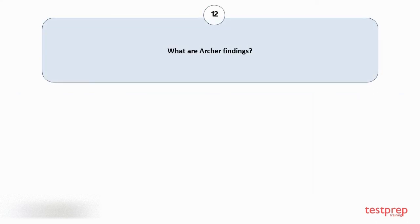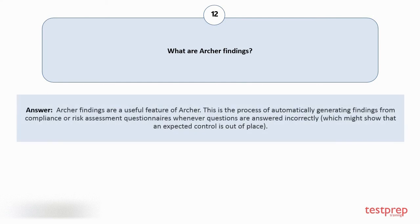Question number 12: What are Archer findings? Archer findings are a useful feature of Archer. This is the process of automatically generating findings from compliance or risk assessment questionnaires, whenever questions are answered incorrectly, which might show that an expected control is out of place.